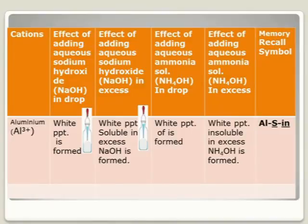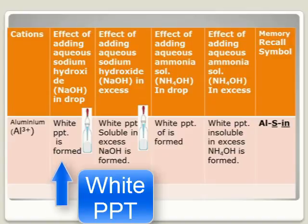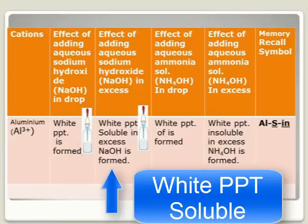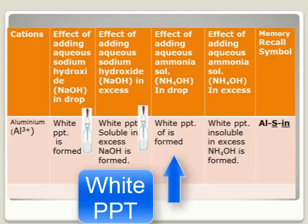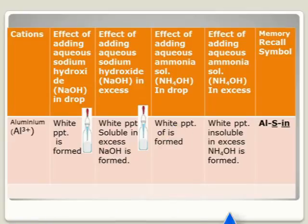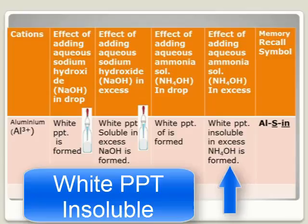Our first test solution contains aluminium. We will first use sodium hydroxide — first in drops, then in excess. For sodium hydroxide added in drops, a white precipitate is formed. If you add it in excess, the white precipitate becomes soluble in excess sodium hydroxide. Now for ammonium hydroxide: when you add it to a solution containing aluminium, it will first form a white precipitate. If you add it in excess, the white precipitate is insoluble in excess ammonium hydroxide.